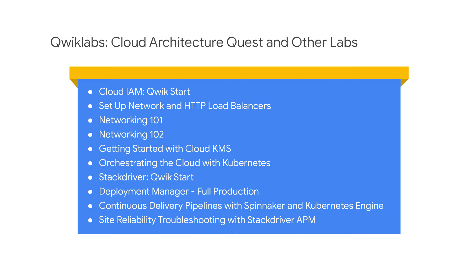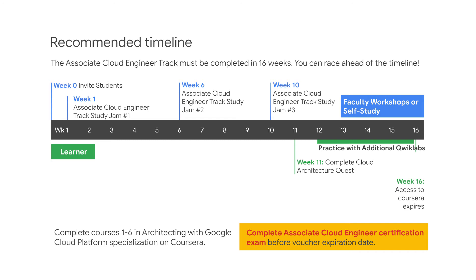From IAM to networking to Kubernetes engine deployment, this quest is composed of specific labs that will put your GCP knowledge to the test. In addition to this quest, learners also have access to other labs. The Associate Cloud Engineer track must be completed in 16 weeks. Complete the Architecting with Google Cloud Platform specialization within the first nine weeks. Complete the Cloud Architecture Quest and additional hands-on labs by week 16, and complete the Associate Cloud Engineer certification exam before the voucher expiration date.